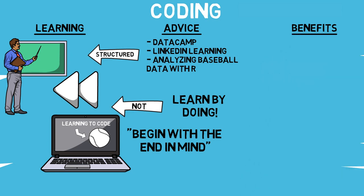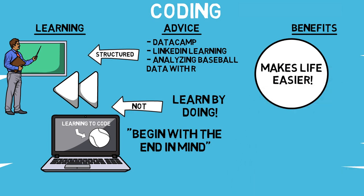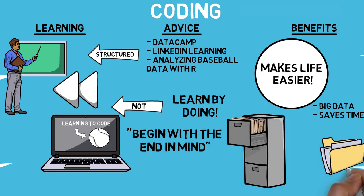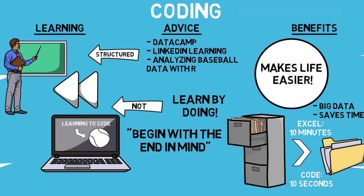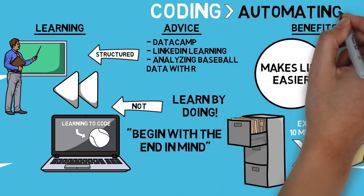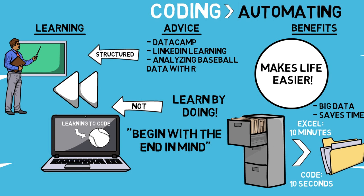I wanted to hear about the benefits Sam believes learning to code brings to an organization. Really what code does is it makes your life easier — that's the overarching theme of why you'd want to learn it. Code allows you to work with big data rather than in Excel, and it creates reproducible processes that save you time. For example, if you downloaded 20 CSV spreadsheets and wanted to combine them, it would take about 10 minutes in Excel — but in a programming language, you could do it in under 10 seconds with three or four lines of code. Automating processes with reproducible code gives your analysts more time to work on research projects and actually impact the team.